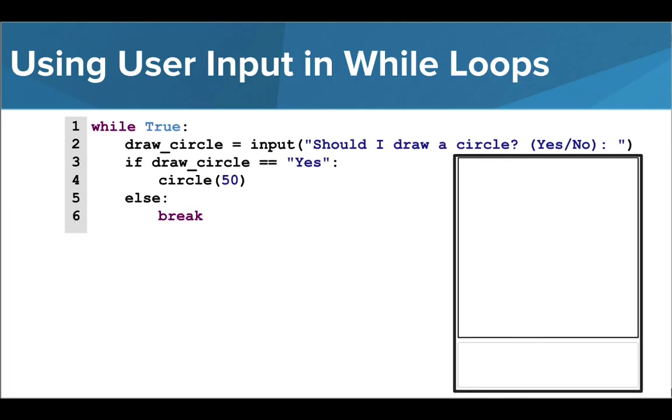We can rewrite this program to use a forever loop using while true to provide the same functionality. Instead of asking the user for input both inside and outside the while loop, we can simply use while true to start the program. Then we can ask the user if they want to draw a circle. If they say yes, we will draw the circle.